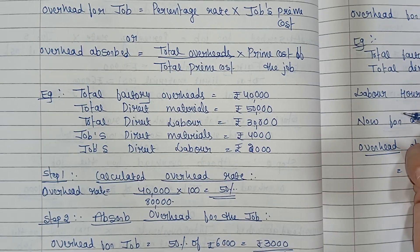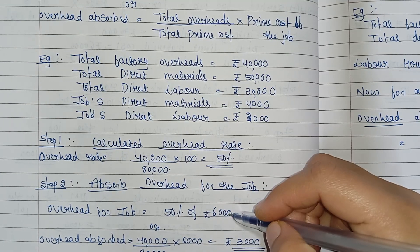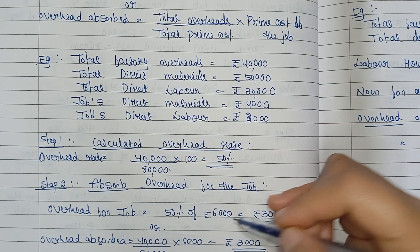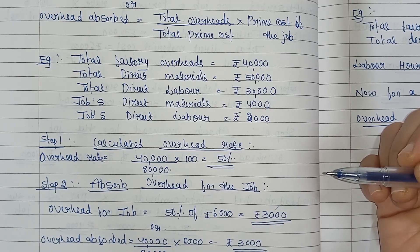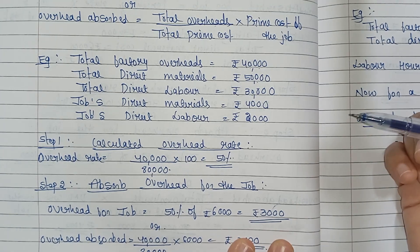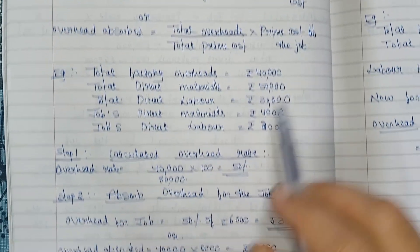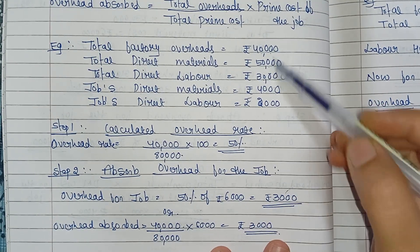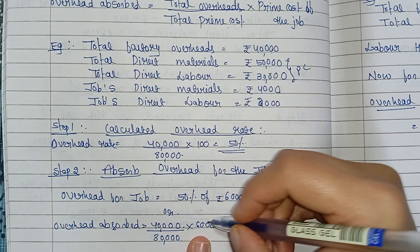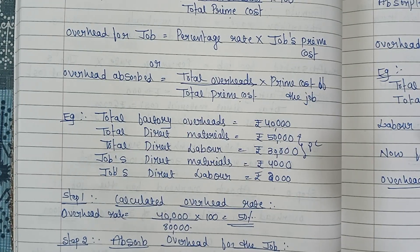So the overhead rate is 40,000 divided by 80,000 into 100, which gives us 50%. Now, overhead absorbed for the job: the job's prime cost is ₹4,000 plus ₹2,000 equals ₹6,000. So 50% of ₹6,000 equals ₹3,000. We can also calculate directly: total overheads 40,000 divided by total prime cost 80,000, multiplied by job's prime cost 6,000, giving ₹3,000.